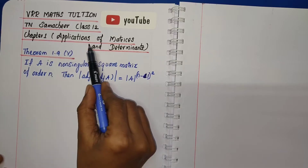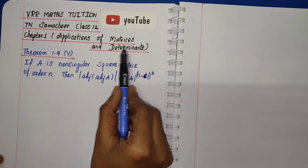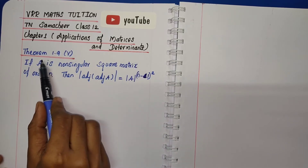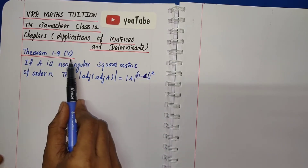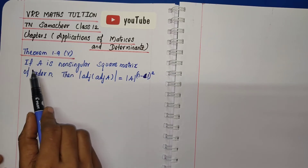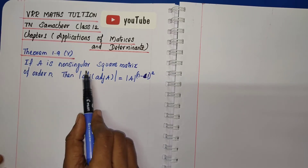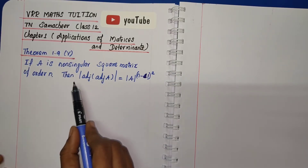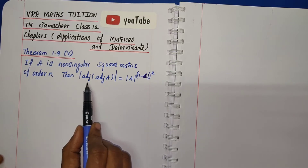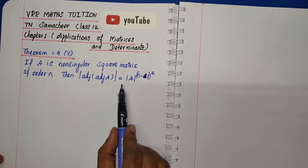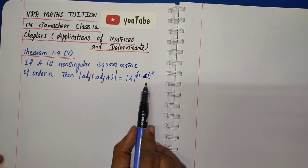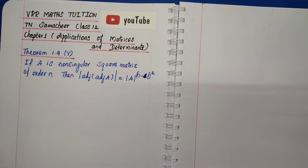Chapter 1: Applications of Matrices and Determinants. Theorem 1.9, 5th Division. If A is a non-singular square matrix of order n, then determinant of adjoint of adjoint A is equal to determinant A power n-1, the whole square.